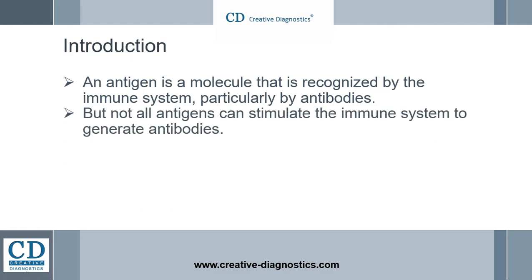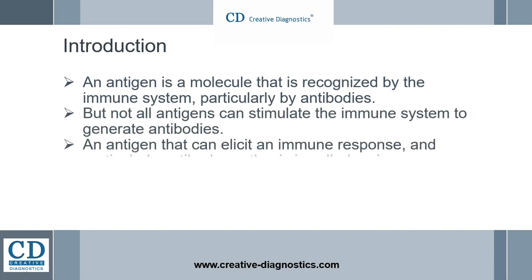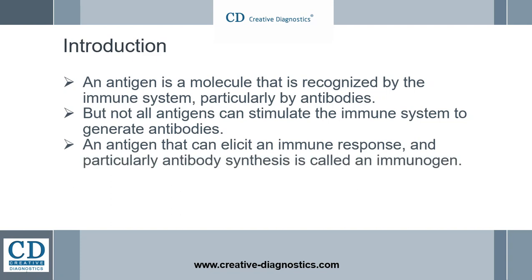Not all antigens can stimulate the immune system to generate antibodies. An antigen that can elicit an immune response, and particularly antibody synthesis, is called an immunogen. Proteins with molecular weights higher than 5 to 10 kilodalton are immunogens, while small peptides, pesticides, antibiotics, or hormones are not.